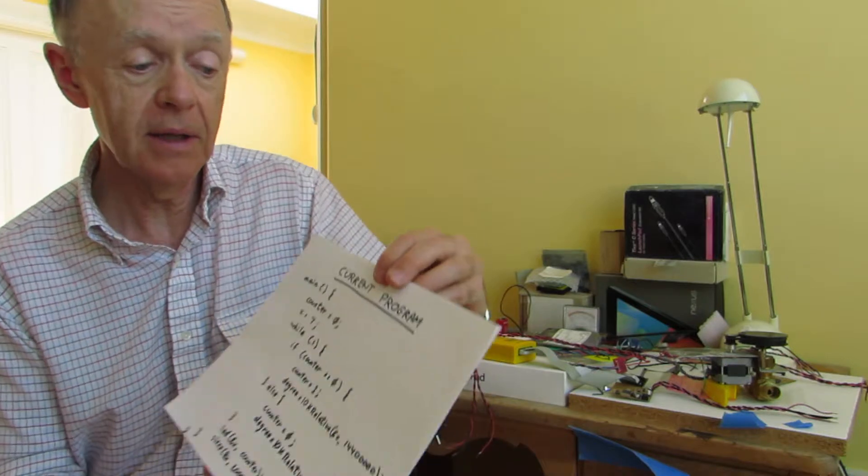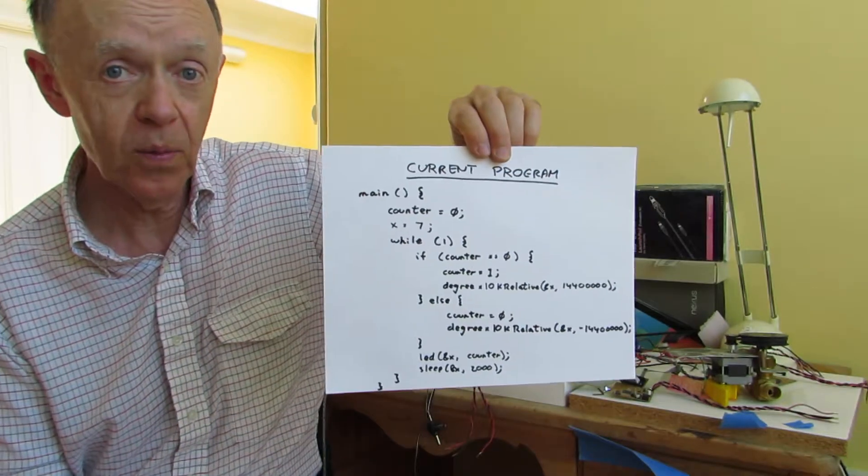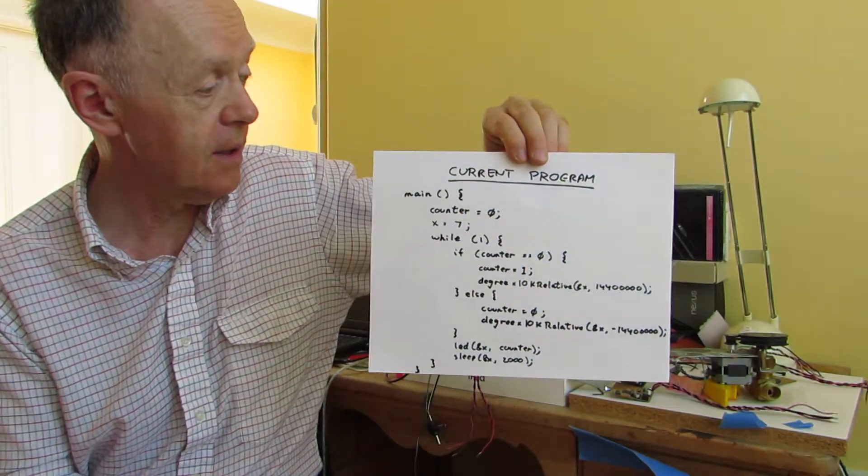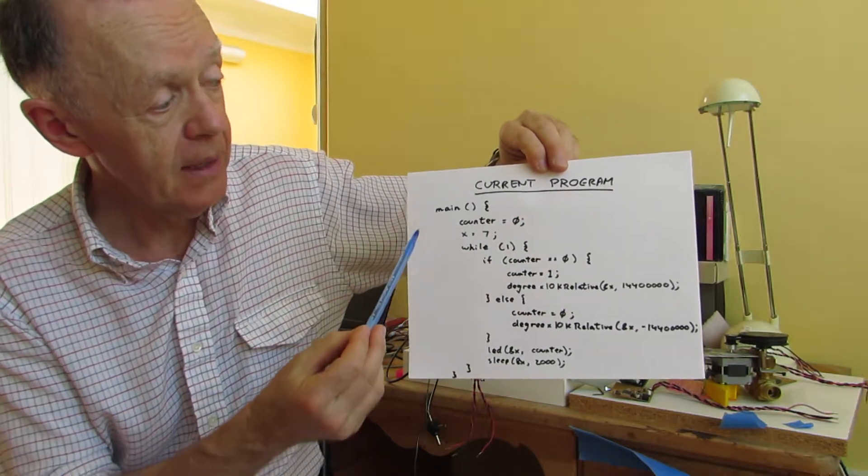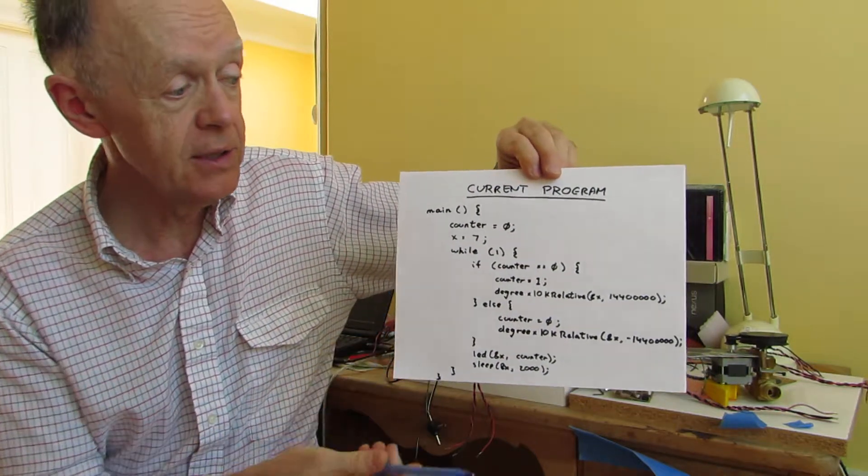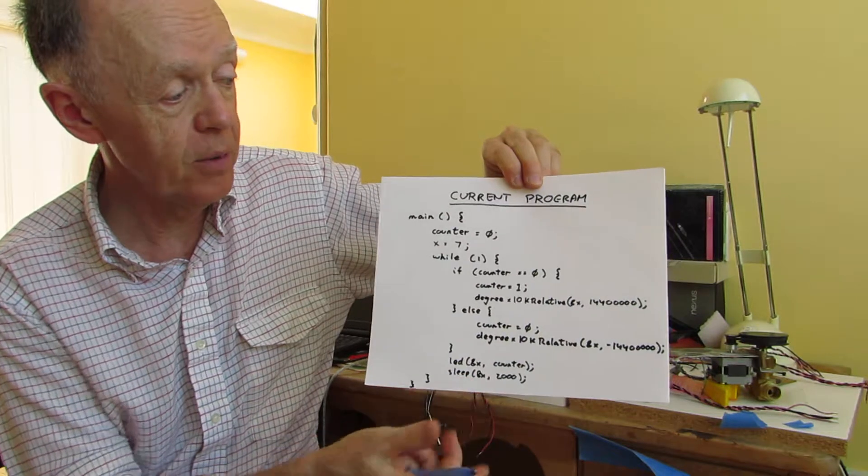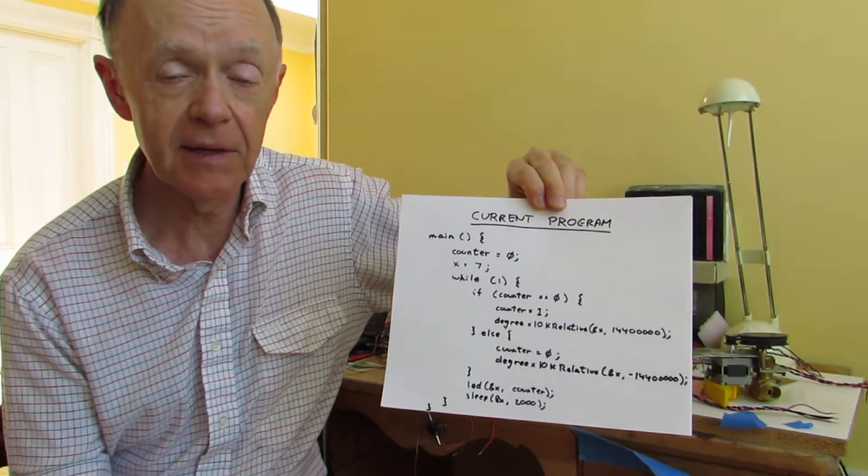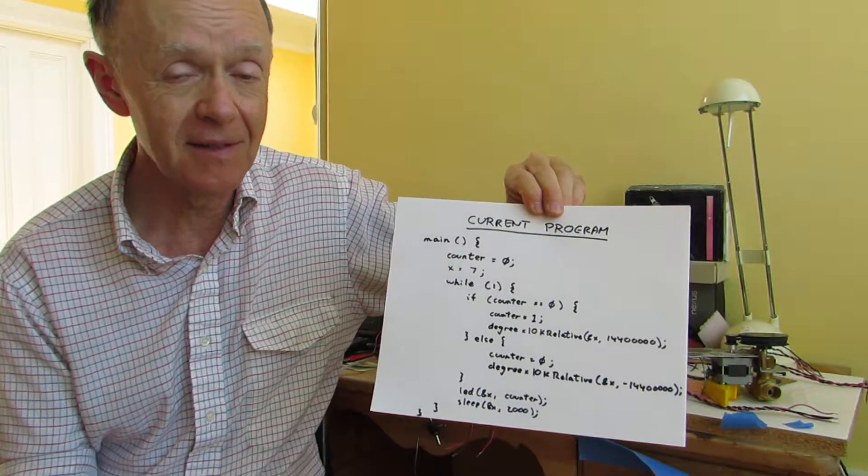I'll just show you quickly the current program that we are using on this motor. It's written in a C-like language, and we parse it with Flex and Bison, which are the GNU equivalents of Lex and Yacc.